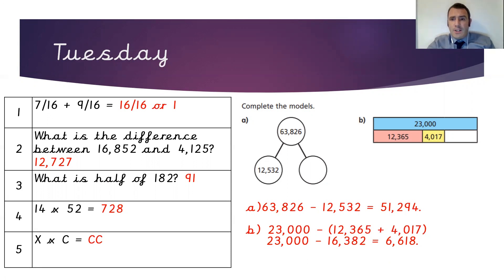Part B is very similar, it just takes an extra step. We know our whole bar model is worth 23,000. We've got two parts: 12,365 and 4,017. We need to add those two numbers together to give us the total to subtract from our overall number. So we add those together and get 16,382 that we subtract from 23,000. That gives us 6,618, which is the missing value. We can check by adding 12,365, 4,017, and 6,618 together to get 23,000.